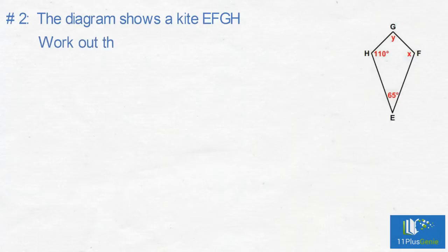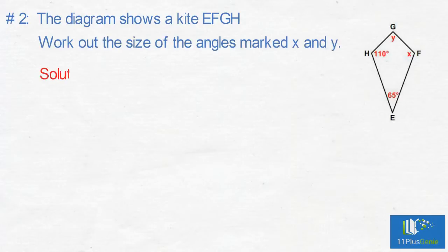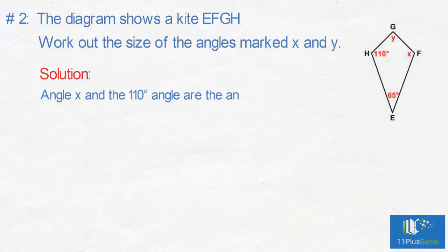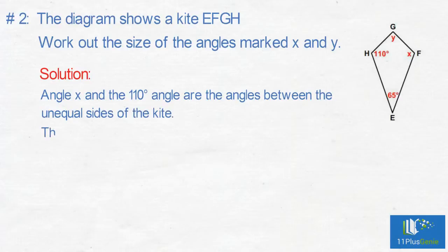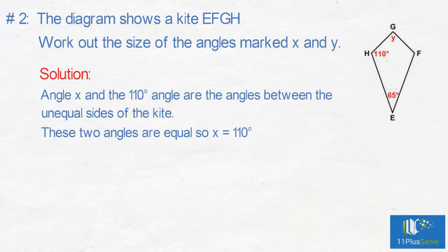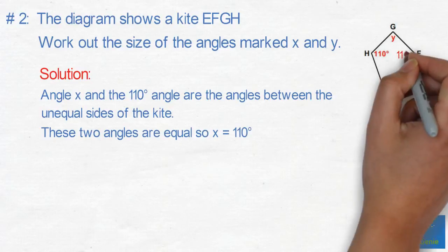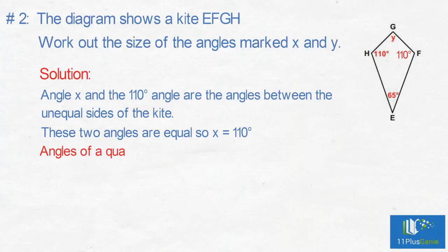Example 2: The diagram shows a kite EFGH. Work out the size of the angles marked X and Y. Angle X and the 110-degree angle are the angles between the unequal sides of the kite. These two angles are equal, so X equals 110 degrees. We know that the angles of a quadrilateral add up to 360 degrees.